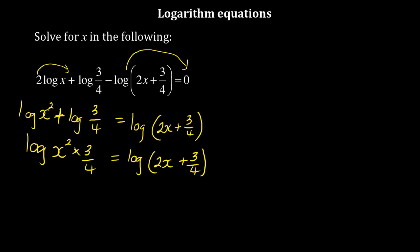Because I have a log on both sides and everything is multiplying, I can drop the logs. So x squared times 3 over 4 equals 2x plus 3 over 4. This is one of the rules on logarithm equations that I'm using.